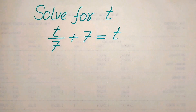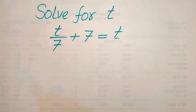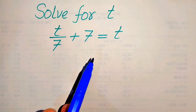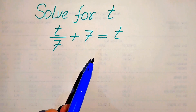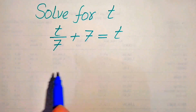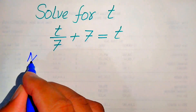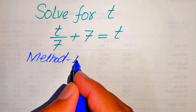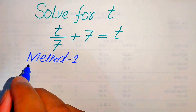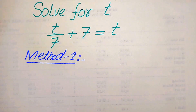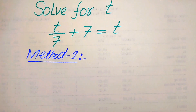Hello everyone. How to solve this problem for the values of t if we have t over 7 plus 7 equals t. We solve this problem using two methods and I hope you like both of these methods. If you have any other method in mind, please don't hesitate to write it into the comment section.